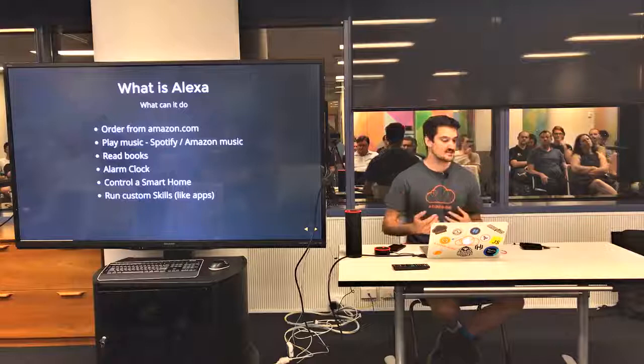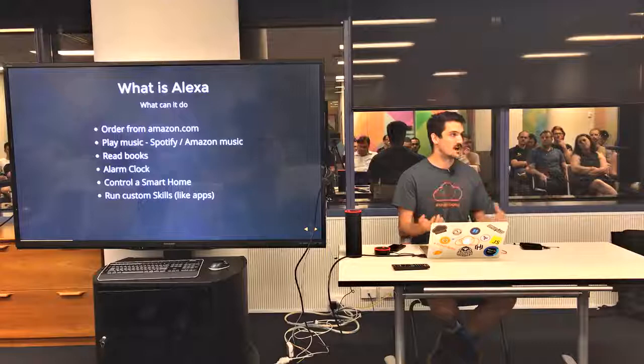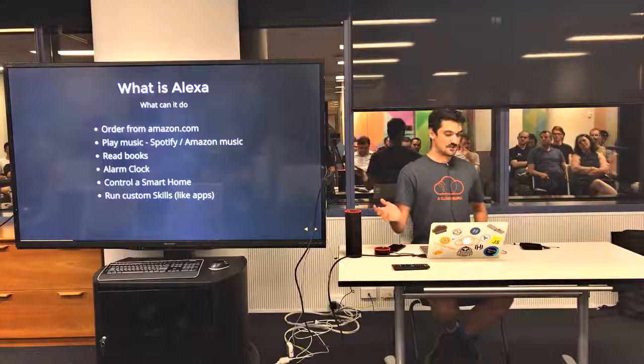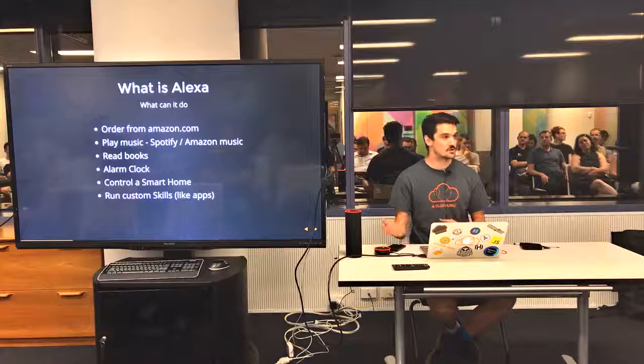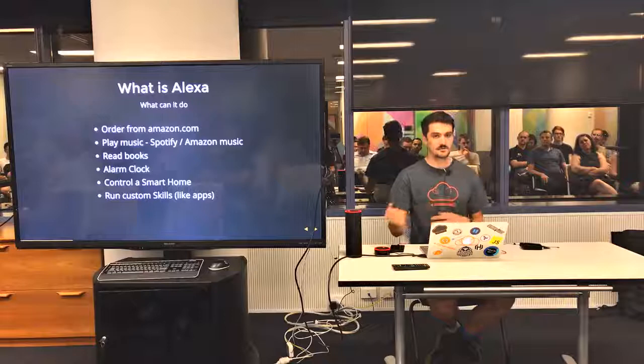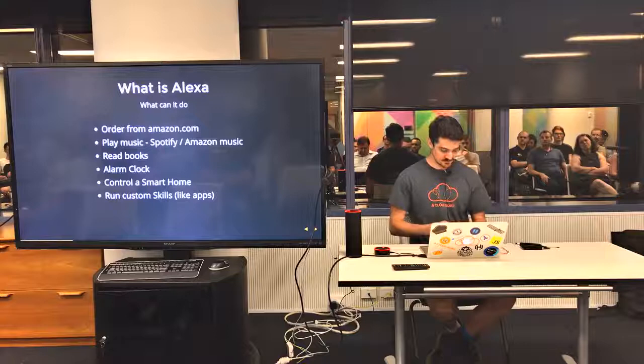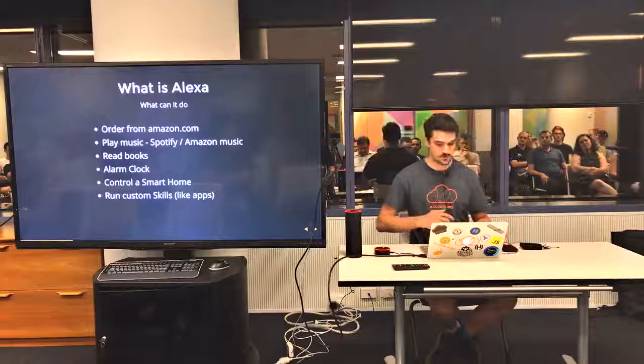So the things you can do with it: you can order from Amazon.com, so if you're in the US and you've got Amazon Prime you can order your groceries and your next PlayStation game. You can play music through Spotify, which is pretty much all I use it for over here because we're very limited. You can read books through Audible and other e-book style systems, as well as do things like alarm clocks and smart homes. And the interesting bit is running a custom skill — custom skills are kind of like apps but in a conversational kind of way, with no traditional interface to deal with.